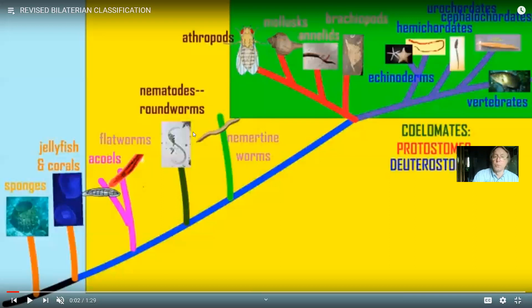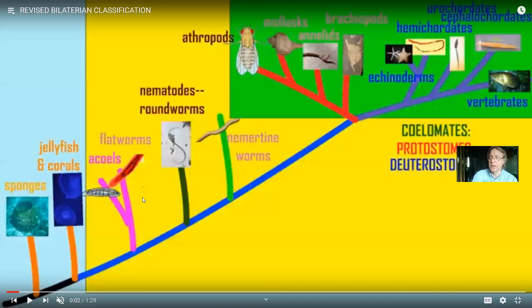Nematodes were a little more complex. They didn't have a true coelom. They don't have a circulatory system. But then you would get to the higher animals, the coelomates, that have a body cavity. Most had segments — or like the mollusks, the first mollusks had segments. They had hearts, etc. So anatomically, one could support this classification of life.